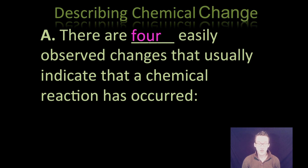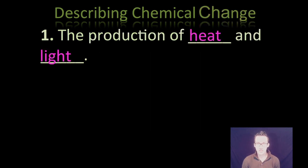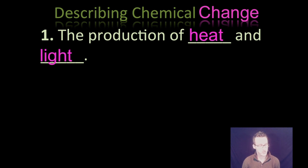Alright, so first things first. There are four easily observed changes that usually indicate that a chemical reaction has occurred. First, the production of heat and/or light. So temperature changes are really good indicators that you've got a chemical change. Light is being given off as the reaction occurs, really good indication of a chemical change.